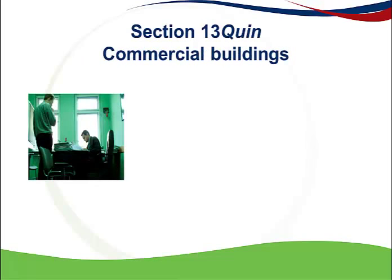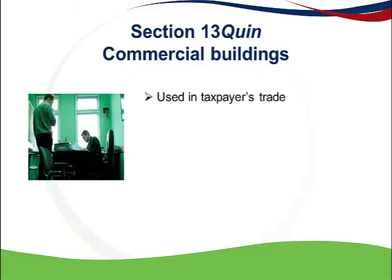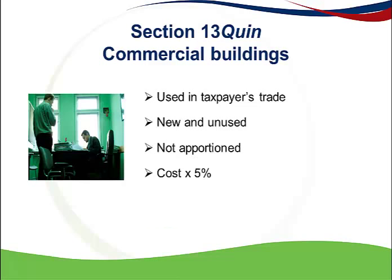The second allowance is the section 13 Quinn allowance on commercial buildings. Examples of commercial buildings are offices or storage facilities. To be able to claim the allowance, these buildings must be used in the taxpayer's trade, but will not be a manufacturing building or used for residential accommodation. The building must be new and unused — the taxpayer constructed it himself or purchased it directly from the developer. No allowance is claimable on the purchase of a used building. This allowance is also not apportioned and is claimed at 5% per year of the cost price for 20 years.